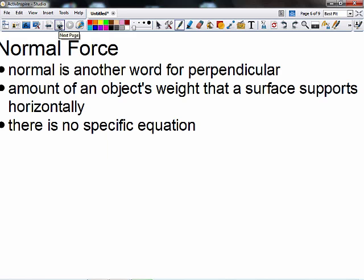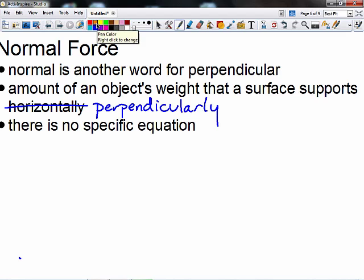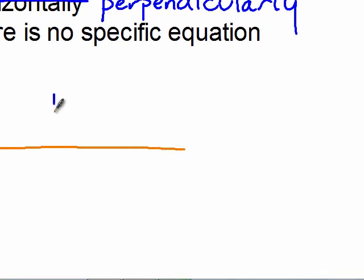Our third force we're looking at is something called the normal force. And normal doesn't mean just ordinary or mundane or routine. It means perpendicular. The normal force is the amount of an object's weight that a surface supports perpendicularly. There's no specific equation for the normal force. This depends on how the surface is oriented, if an object's being pushed up or pulled down otherwise. So if we draw or continue our free body diagram from the last problem, we can draw a surface.